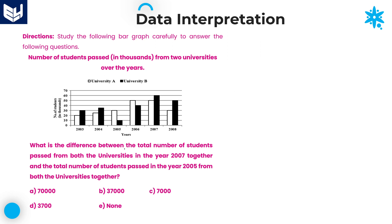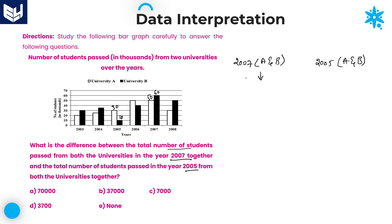The second question: what is the difference between the number of students who passed from both universities in the year 2007 together and the total number of students who passed in the year 2005 from both universities together? First calculate 2007 total: University A is 50 and University B is 60. For 2005: University A is 30 and University B is 10.